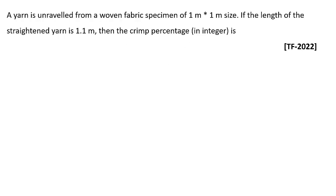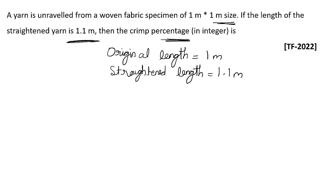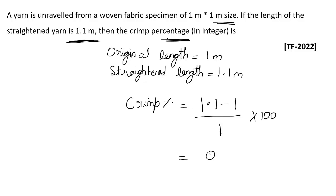Next question: a yarn is unraveled from a woven fabric specimen of one meter by one meter size. If the length of the straightened yarn is 1.1 meters, find the crimp percent as an integer. The original length is 1 meter and the straightened length is 1.1 meters. Crimp percent equals (straightened length minus original length) divided by original length, multiplied by 100: 0.1 divided by 1 into 100 equals 10 percent.